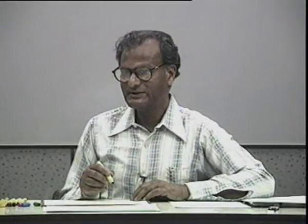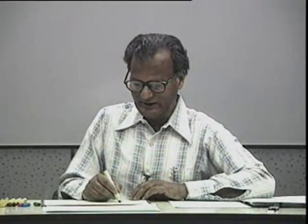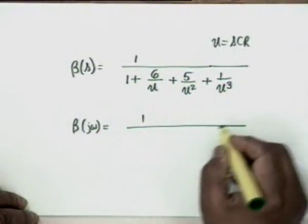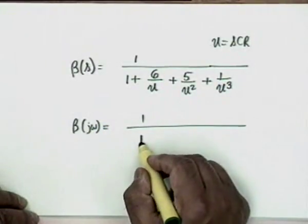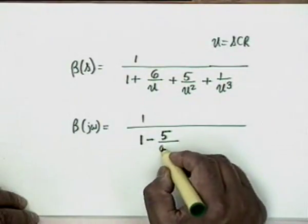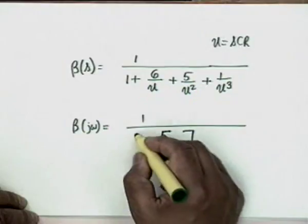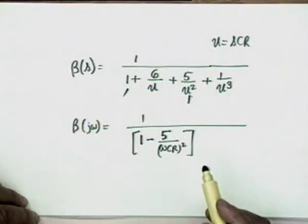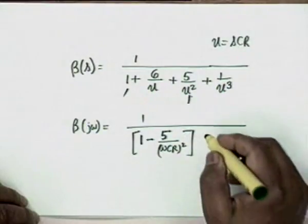For sinusoidal oscillation, we evaluate β(jω). Substituting U = jωCR, β(jω) = 1 / [(1 − 5/ω²C²R²) + j(1/ωCR)³ − j·6/(ωCR)].